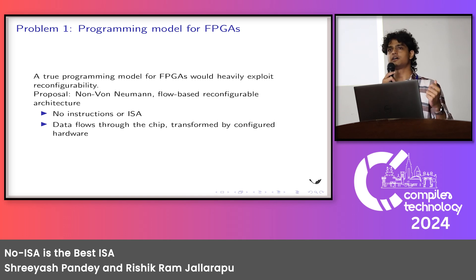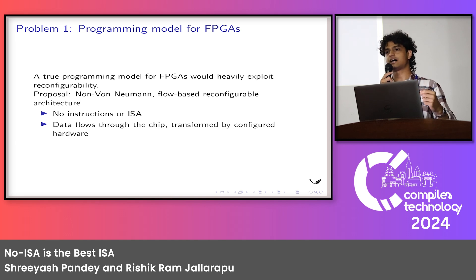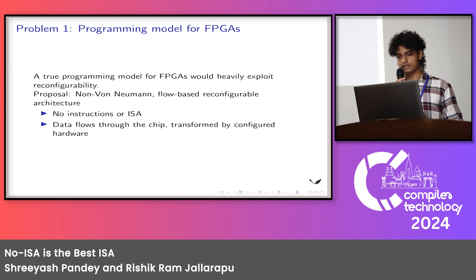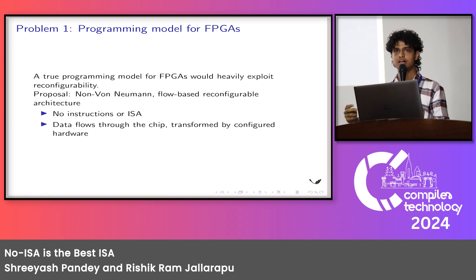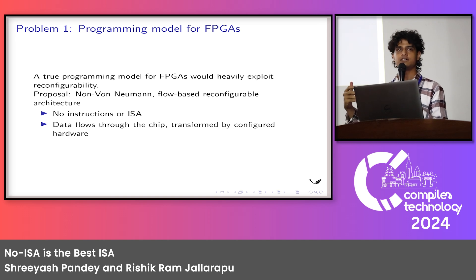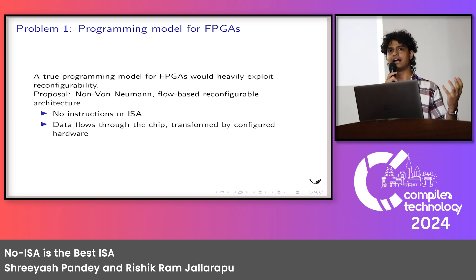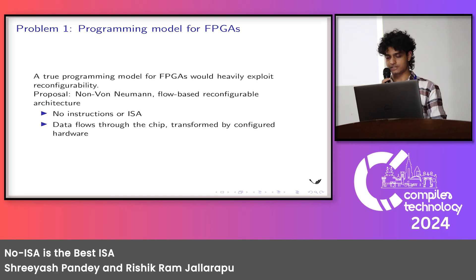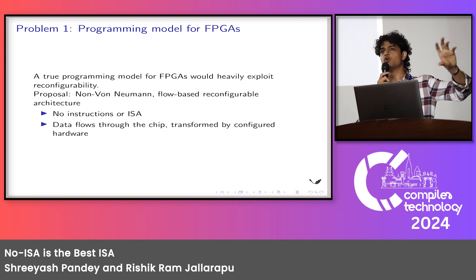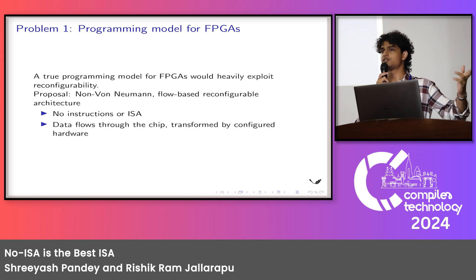What we suggest is that since FPGA's key part is being field programmable, a true programming model for FPGA would have reconfigurability as its center point. The architecture we imagine with reconfiguration is one that has no instructions. How we do it is we take an algorithm, implement hardware for it, and just send data to it. Since the hardware is custom designed for that algorithm, there is no metadata — meaning instructions in traditional computers — that we need to send with the data.